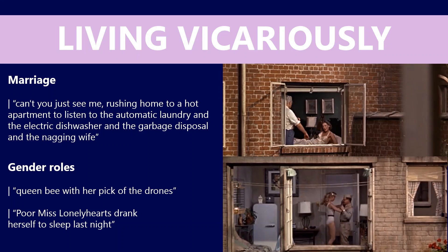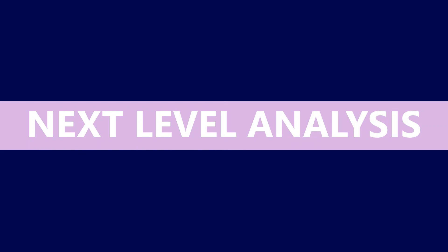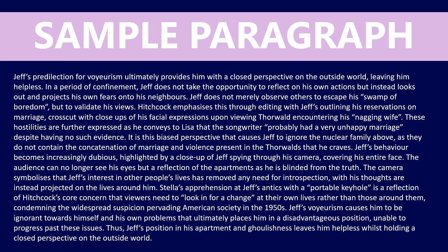We can see how Jeffries does sort of change his mindset — or we can assume he changes his mindset — towards the end based on what has happened. Just with any of these ideas, don't forget your next-level analysis: we're not just thinking about quotations, but also film techniques, symbols, motifs and context information. Let's have a look at a sample paragraph focusing on voyeurism and the idea of introspection. The topic sentence reads: 'Jeff's predilection for voyeurism ultimately provides him with a closed perspective on the outside world, leaving him helpless in a period of confinement. Jeff does not take the opportunity to reflect on his own actions but instead looks out and projects his own fears onto his neighbors. Jeff does not merely observe others to escape his swamp of boredom, but to validate his views.' Hitchcock emphasizes this through editing, with Jeff outlining his reservations on marriage cross-cut with close-ups of his facial expression upon viewing Thorwald encountering his nagging wife.